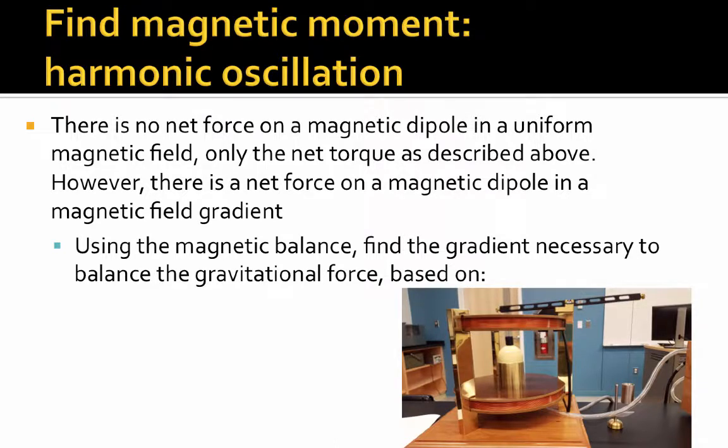What we're going to do is find the gradient necessary to balance the gravitational force at the right-hand side, and the magnetic force equal to μ times dB/dz. And so we will adjust dB/dz and balance it with F, or vice versa, in order to find μ.